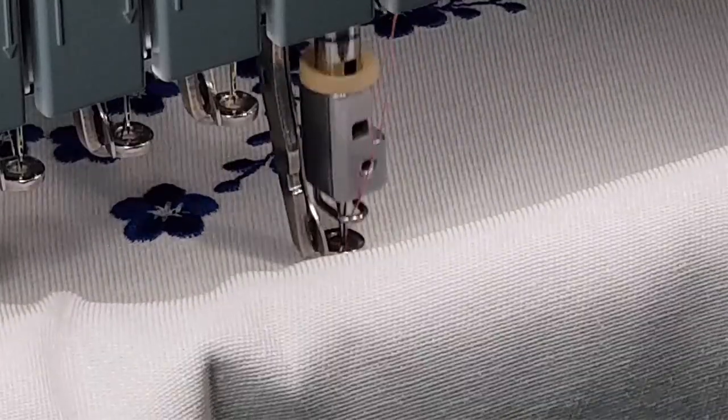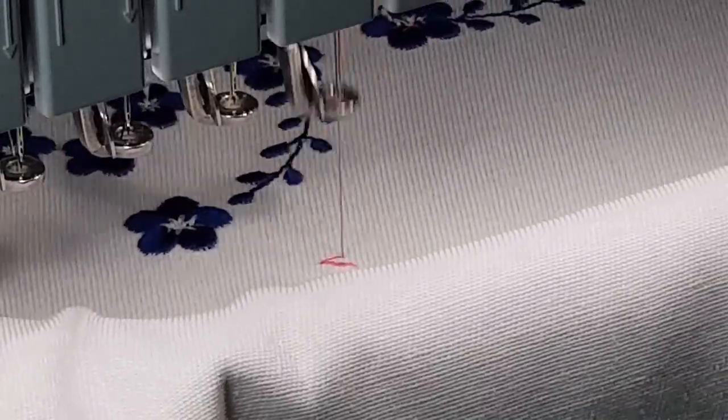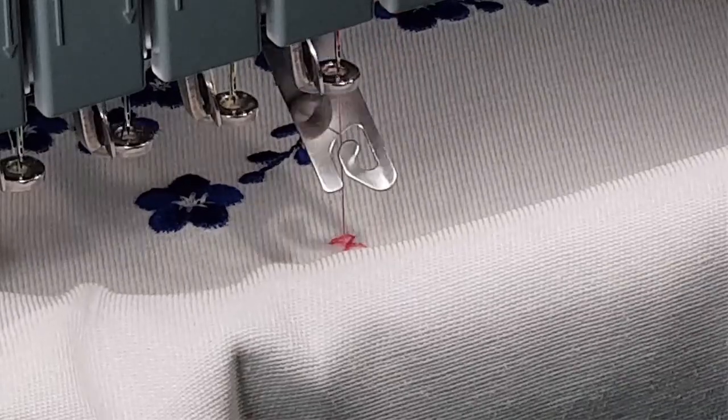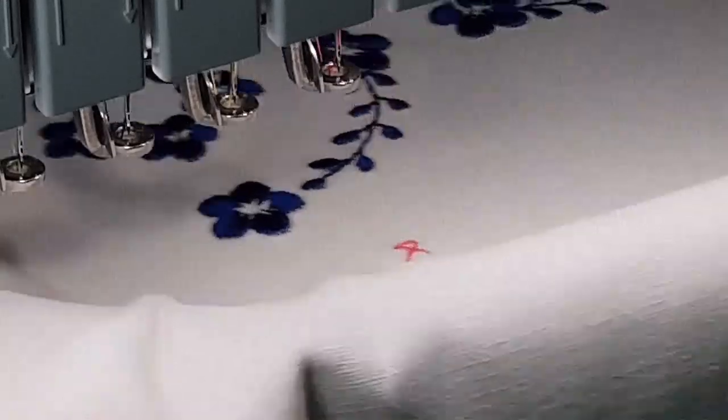At the end of the first hooping, two registration marks are stitched out. These are needed to align the second hooping.